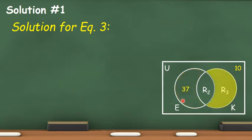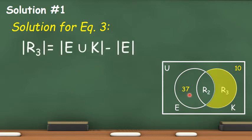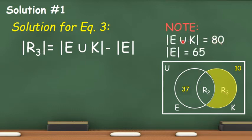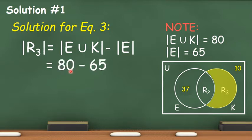Now that we already have the number of elements in R sub 1, we are going to solve for the number of elements in R sub 3. The values we need are the cardinality of E union K, which is 80, and the cardinality of E, which is 65. Substituting the values, we have 80 minus 65, and the answer is 15, meaning there are 15 elements in K that are not in E.